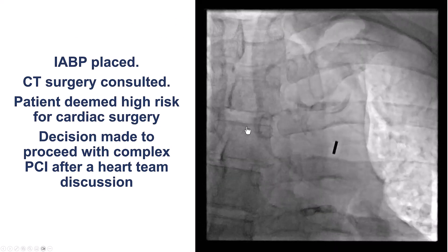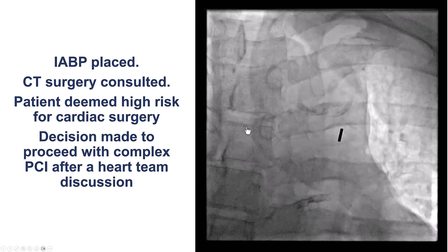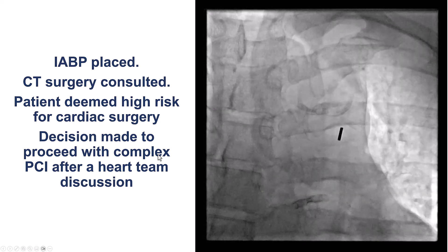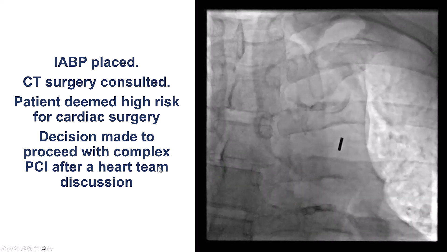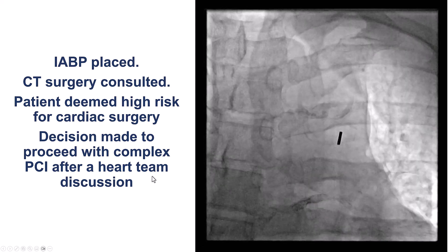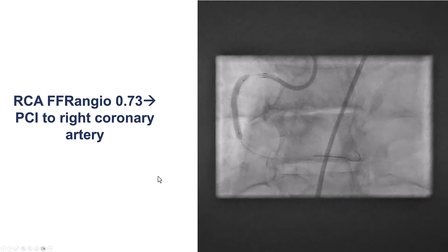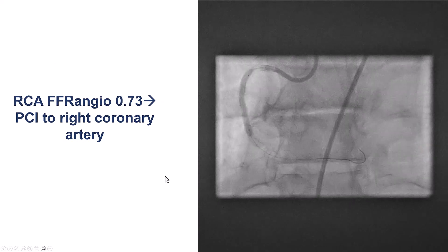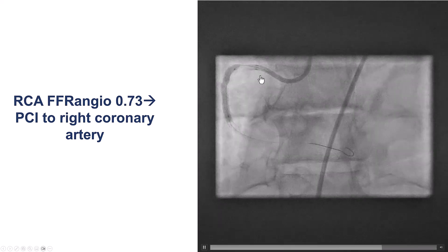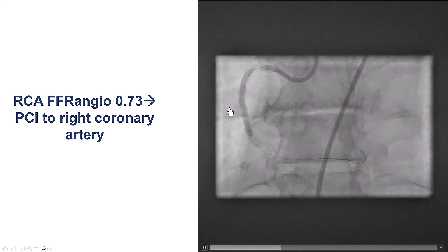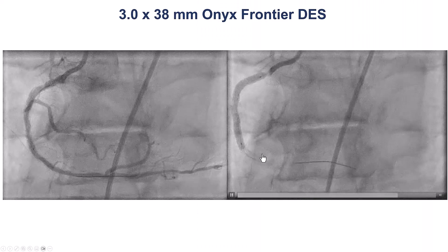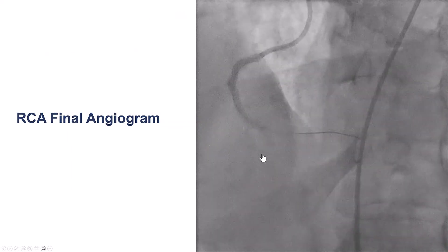The patient received a balloon pump and was sent to the unit for evaluation by cardiac surgery. However, after discussion with the heart team and the surgeons, a decision was made to proceed with percutaneous coronary intervention. The next day, the patient came back to the cath lab. He had an FFR of 0.73 in the right coronary artery, and this was successfully stented with a 3.0 by 38 mm stent that provided a nice result.